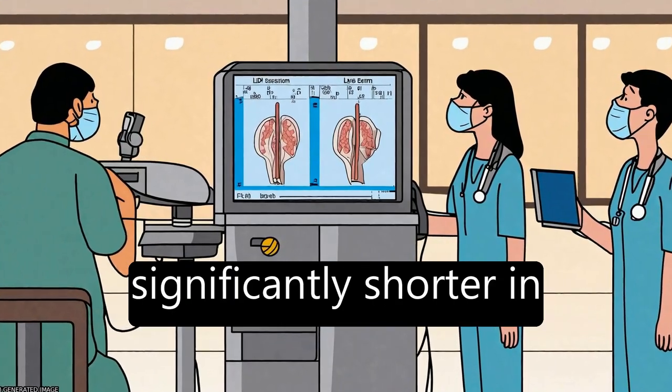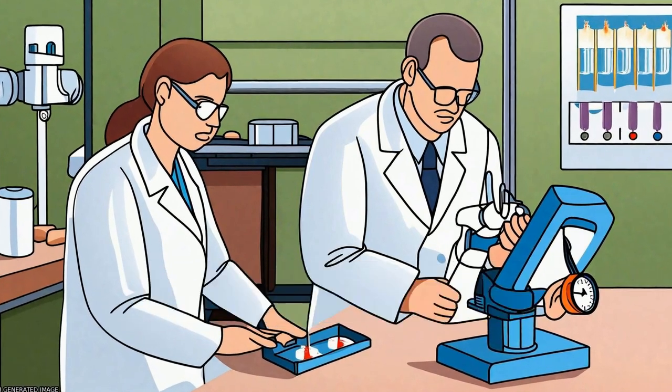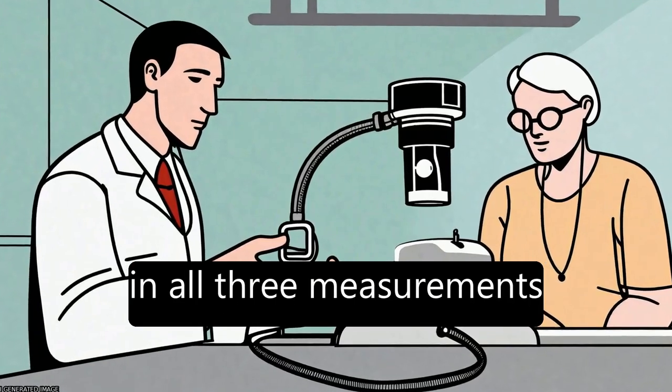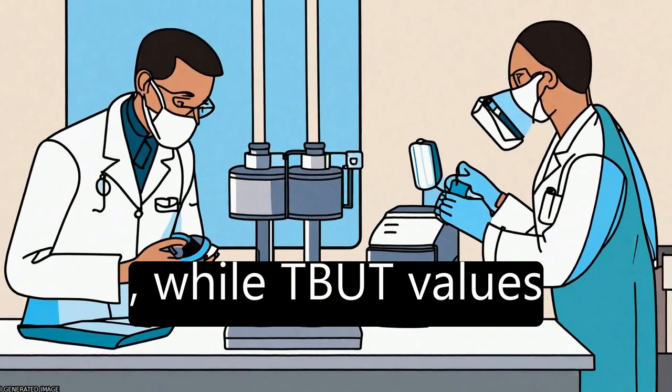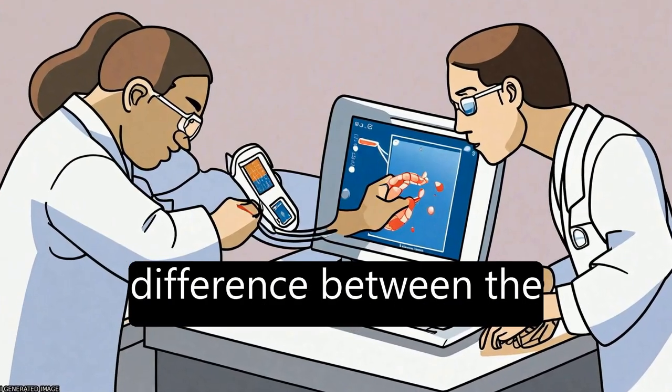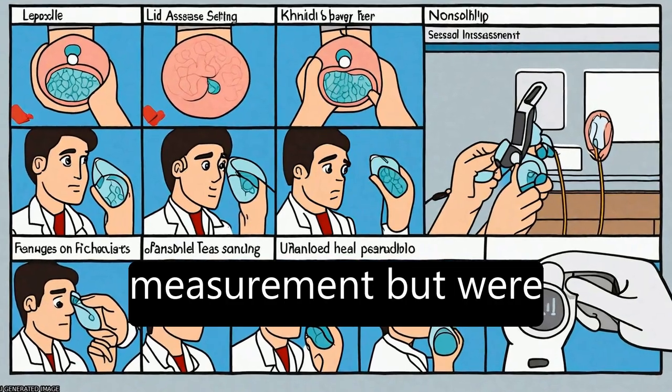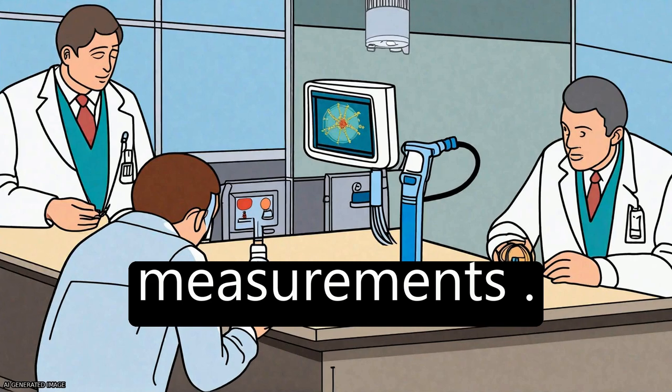NIBIT values were significantly shorter in the dry eye symptom group than in the control group in all three measurements, while TBUT values showed no significant difference between the groups in the first measurement but were significantly shorter in the second and third measurements.